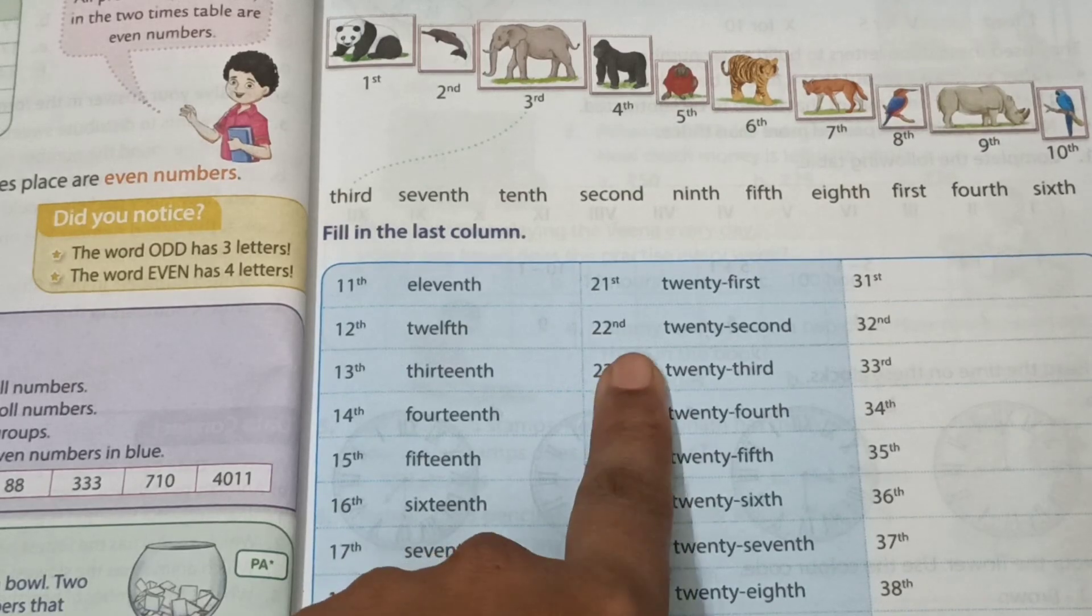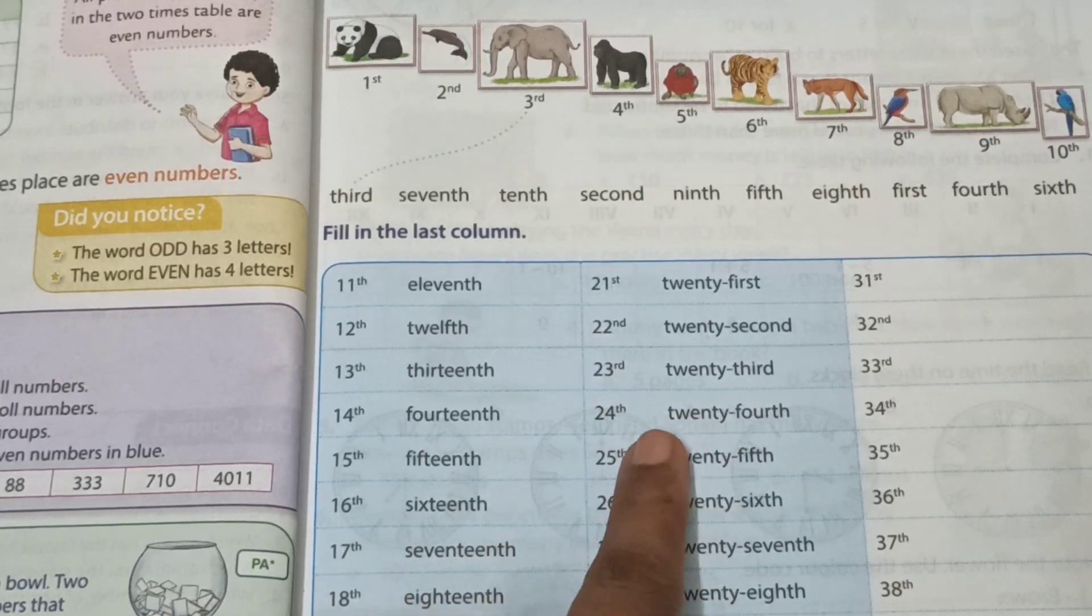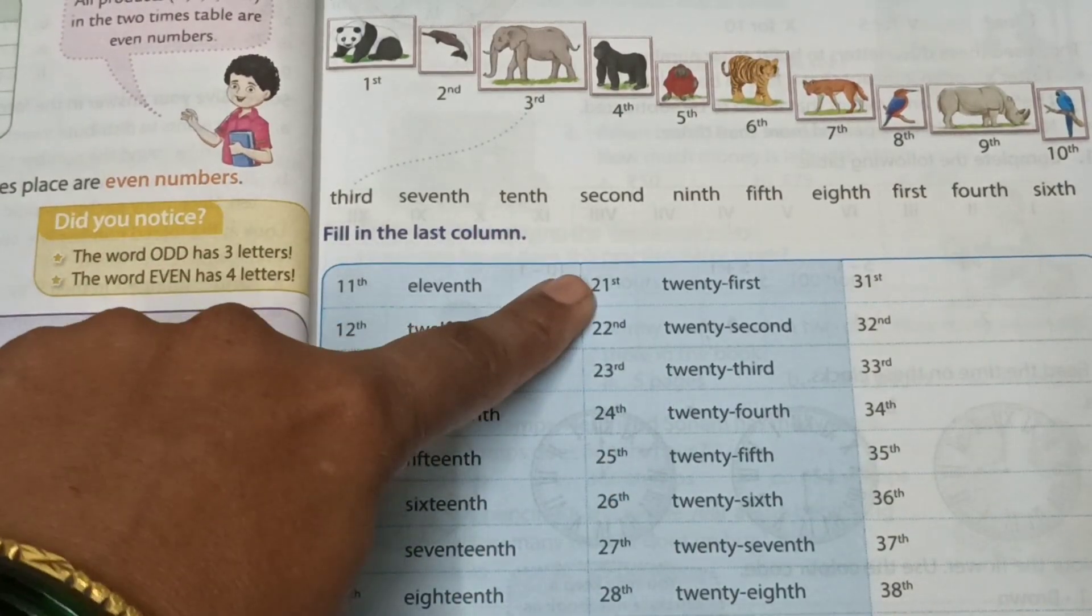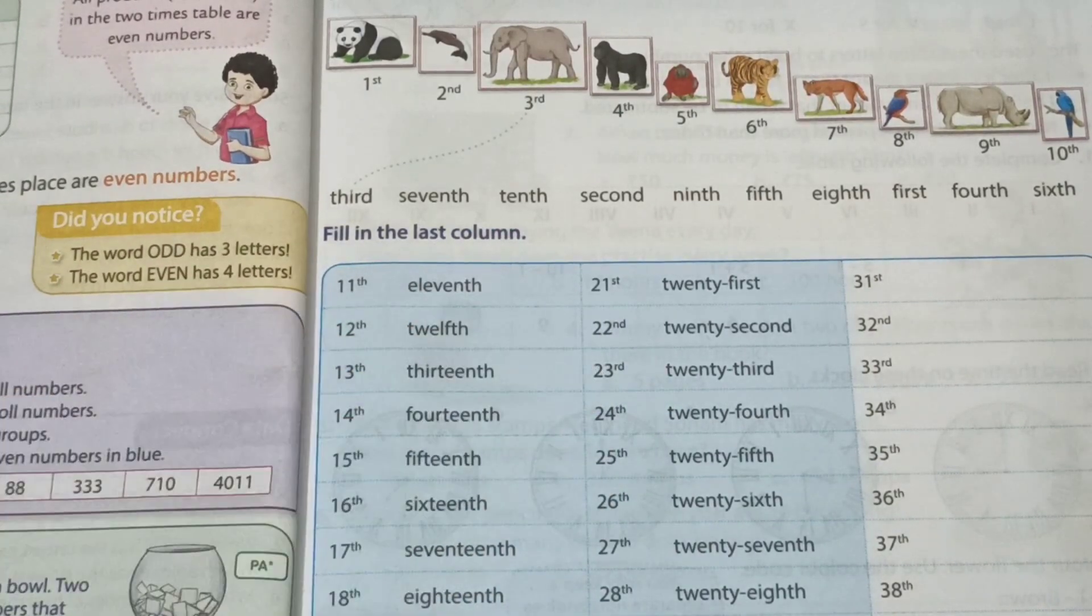21st, 22nd, 23rd, 24th. Only 1st, 2nd and 3rd are different.